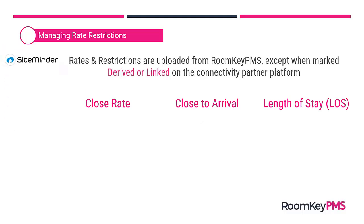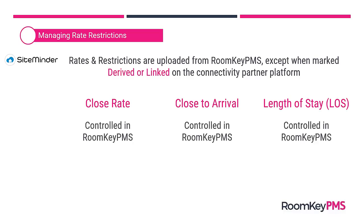For SiteMinder, rates and restrictions are uploaded from Roomkey, except when the rate is created as a derived or linked rate on the SiteMinder platform. If you create the rate as derived or linked on SiteMinder, rates and restrictions are not uploaded from Roomkey — you manage those on the SiteMinder platform itself. Otherwise, if created as independent or not derived, all three types of restrictions applied in Roomkey are uploaded to SiteMinder.